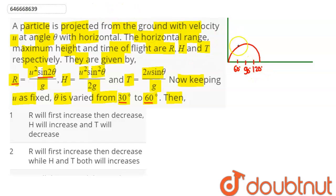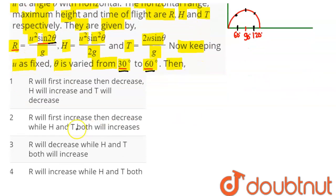So we can see from this graph, this is the sine theta graph. When theta varies from 30 to 60, 2θ shall vary from 60 to 120 degrees. So we can say that first of all, the range will increase, attain a maximum value at 90 degrees and then decrease. So R will first increase, then decrease.